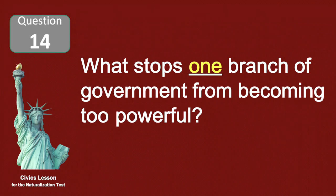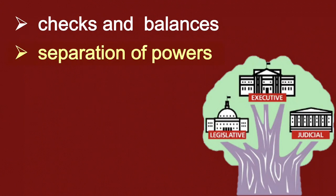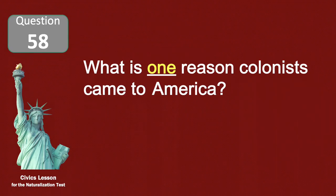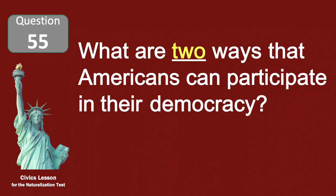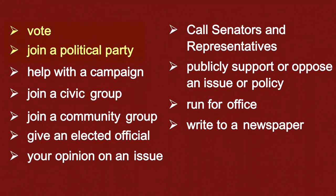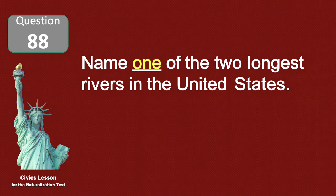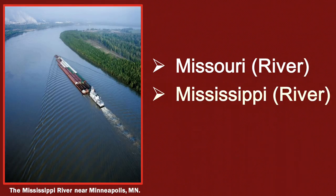What stops one branch of government from becoming too powerful? The separation of powers. What is one reason colonists came to America? For freedom. What are two ways that Americans can participate in their democracy? Vote or join a political party. Name one of the two longest rivers in the United States. The Mississippi.